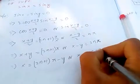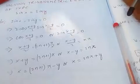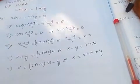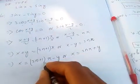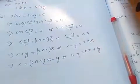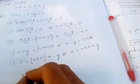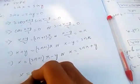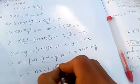Combining both cases, we get x equals nπ plus or minus y, which can be written as x equals nπ plus (-1)^n times y.